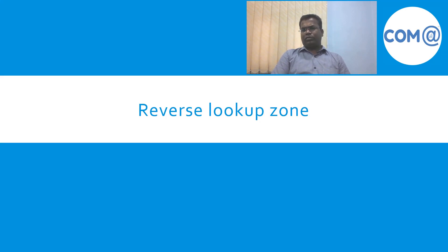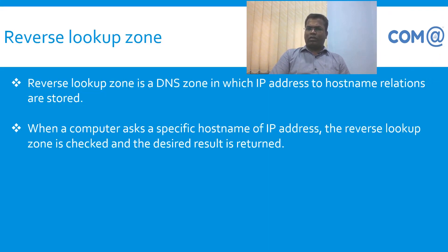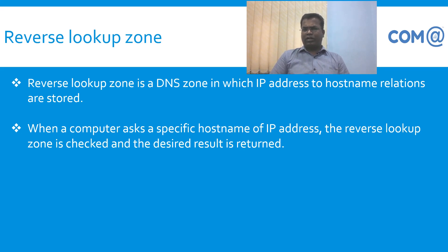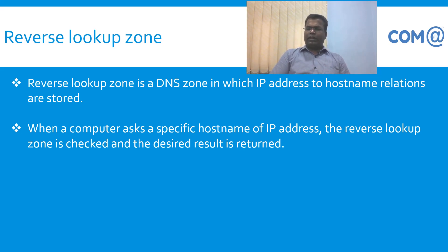The reverse lookup zone resolves IP addresses to names. It uses PTR (pointer) records to resolve IP-to-name queries. The primary DNS server maintains these records so that it can resolve IP-to-name lookups.